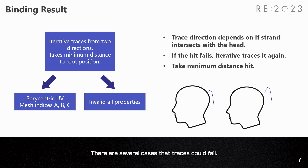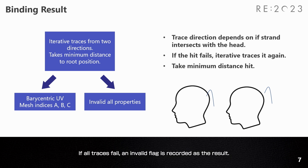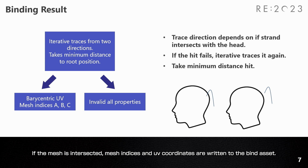There are several cases where traces could fail. If the rays do not intersect with the mesh in the first trace, the ray will be traced iteratively from two directions, taking the minimum distance to the strand root position. If all traces fail, an invalid flag is recorded as the result. If the mesh is intersected, mesh indices and UV coordinates are written to bind the asset.